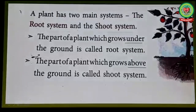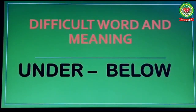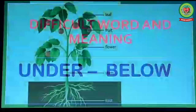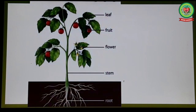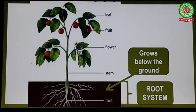A plant has two main systems: the root system and the shoot system. The part of a plant which grows under the ground is called the root system. Underline the word 'under' and write its meaning: below. Now look at this picture — this part of the plant is called the root system.